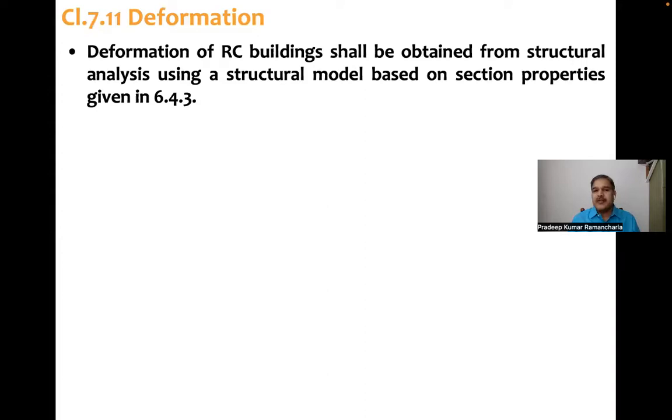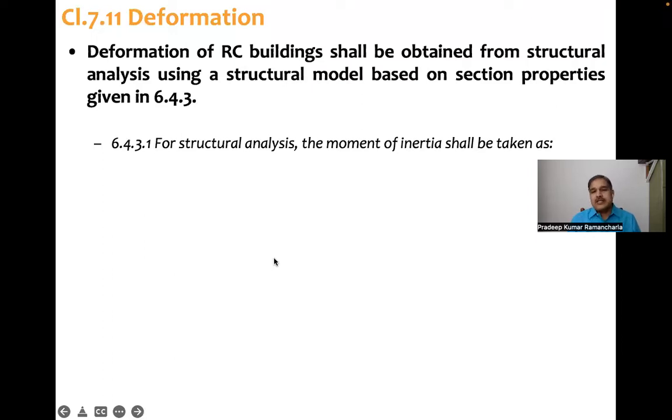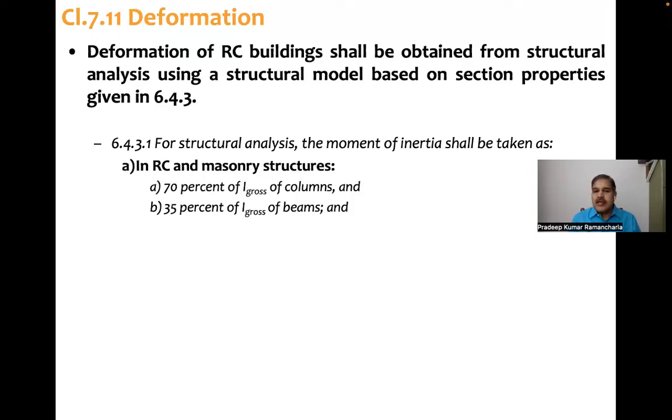So basically, this section properties. For structural analysis, the moment of inertia shall be taken as: in RC and masonry structures, 70% of I gross for columns and 35% of gross moment of inertia for beams.